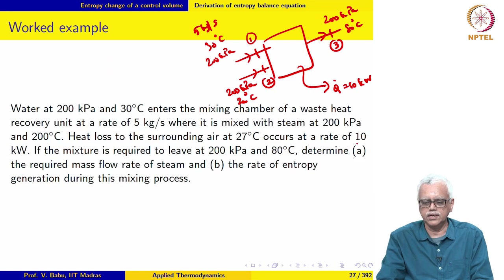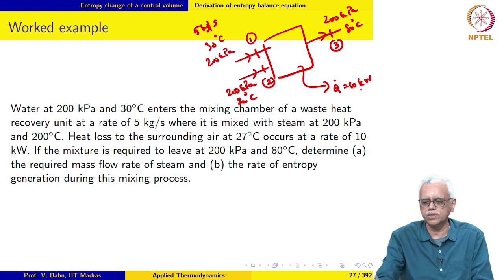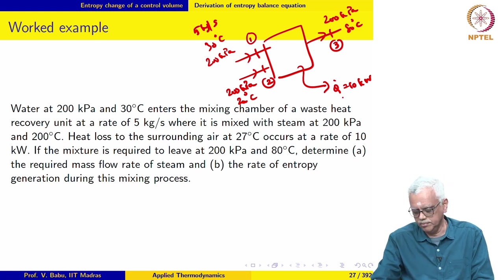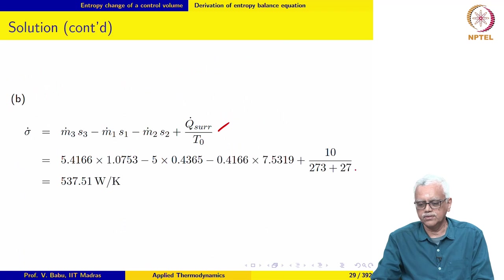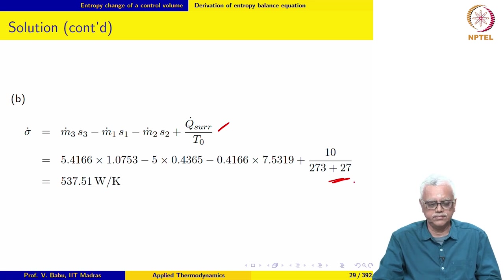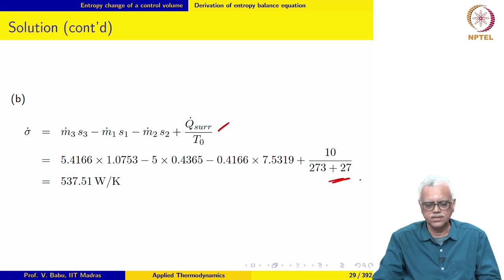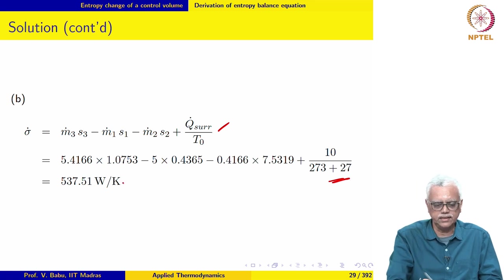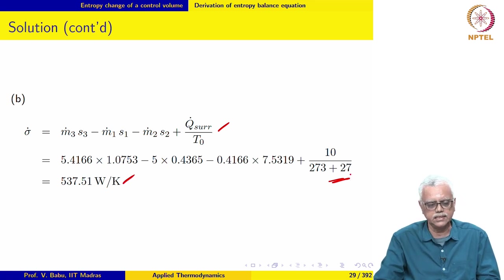Heat is lost to the ambient at the rate of 10 kilowatts, meaning the ambient receives heat — that is the plus side for the ambient. So we compute 10 divided by (273 + 27), inputting temperature in Kelvin. Doing that, we get sigma dot to be 537.51 watts per Kelvin.